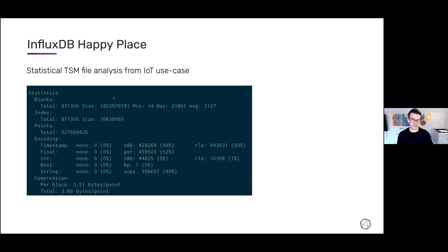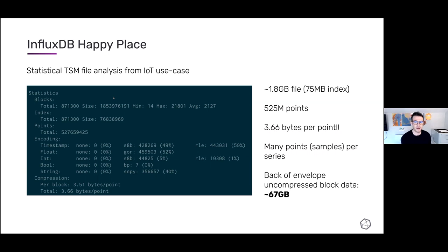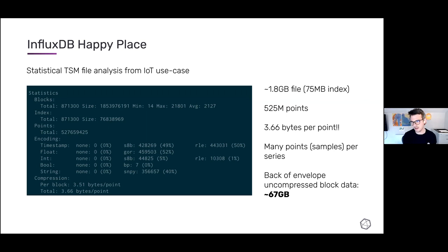Here's an internal tool we have that lets us inspect the TSM data format InfluxDB persists time series data in. Looking at an actual IoT use case: we have almost a 2-gigabyte file with only about 75 megabytes of index. The file has 525 million points in it, so there's only 3.6 bytes per point — very good compression. If we stored those as uncompressed 64-bit timestamps and floats, it would be about 67 gigs of data, but we compress it down to 1.8 gigs.